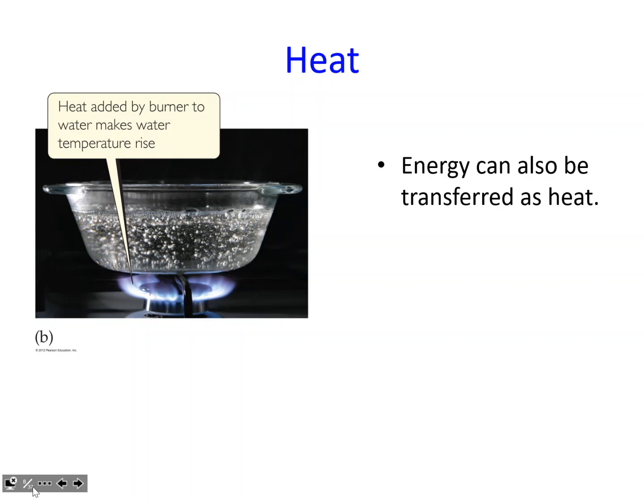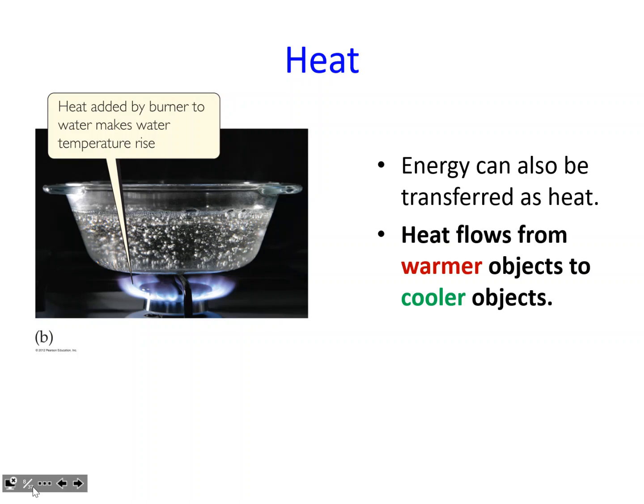Heat always flows from warmer objects to colder objects. For example, when I put my hand on the board, my hand feels cold. If my hand is the system, the heat is leaving my hand and going into the board. If the board were the system, the board would be considered as absorbing the heat. Eventually they'd reach thermal equilibrium at the same temperature. Heat always flows from the warmer object to the colder object — that's why, as the warmer object, my hand feels cold.